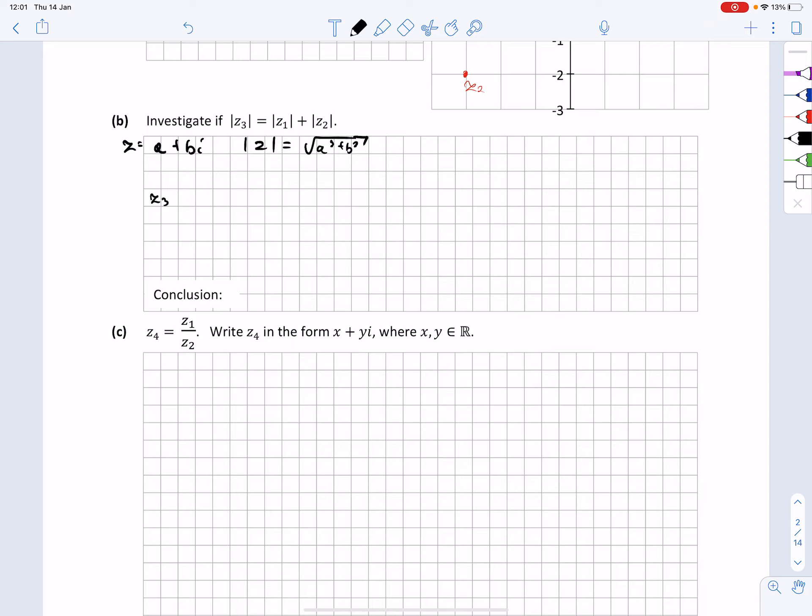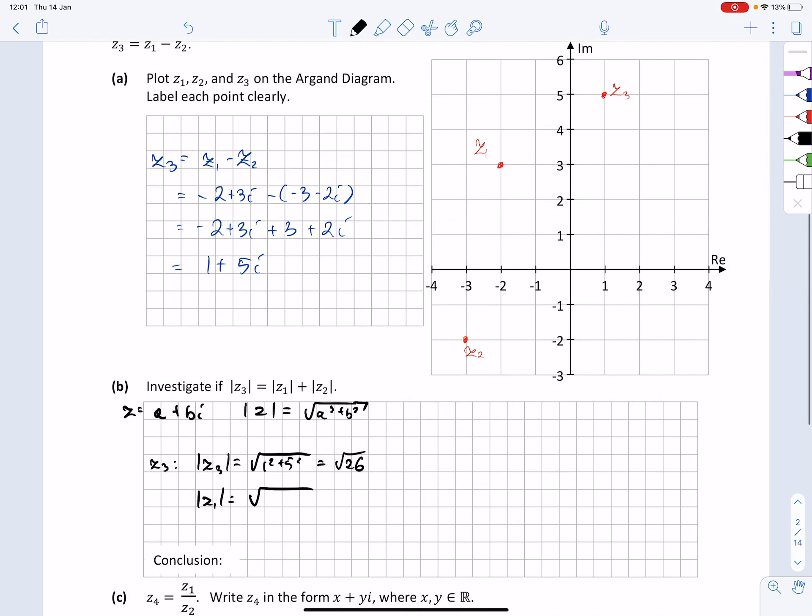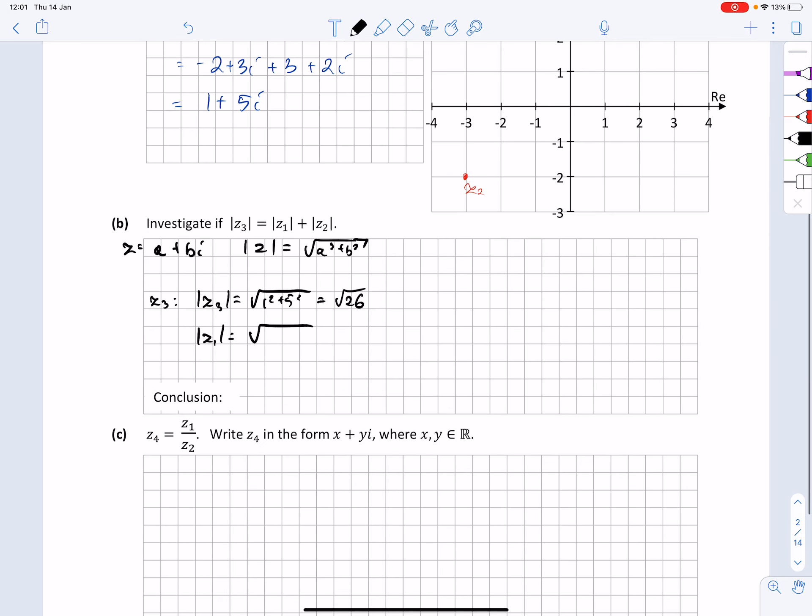For Z3, modulus of Z3 is going to be equal to square root of 1 squared plus 5 squared equals root 26. For Z1, modulus is going to be equal to root, let's take a look at what Z1 is again. Z1 is minus 2 plus 3i, so minus 2 squared plus 3 squared, so that gives me root of 4 plus 9, which is root 13.